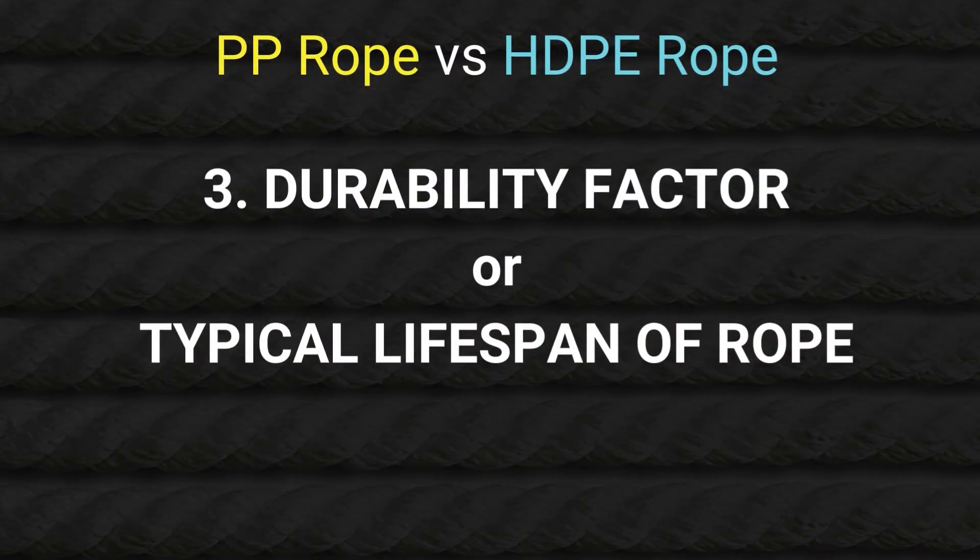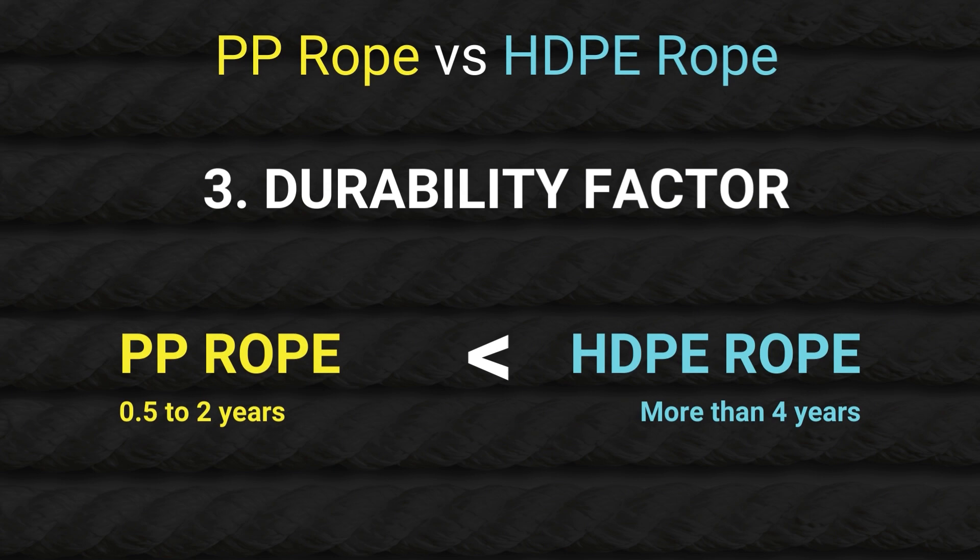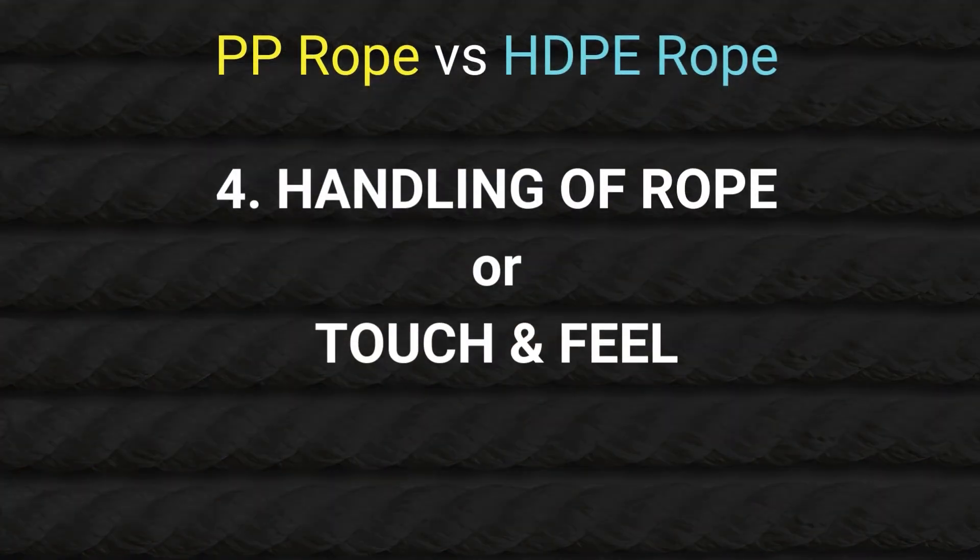The third point of differentiation is based on durability or lifespan. HDPE ropes are more densely packed, which gives them greater longevity than PP ropes. A typical PP rope lasts between one and a half to two years, whereas HDPE ropes last more than four to five years. So if your application doesn't require heavy loads, HDPE ropes are a better choice since they last longer.